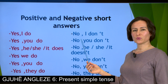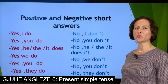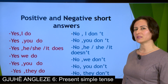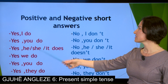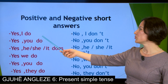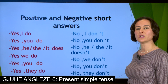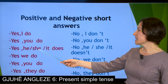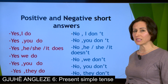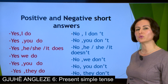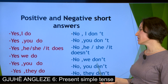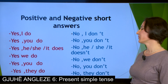In order to answer these questions, we use short forms, defined in two categories: positive and negative answers. Yes, I do. No, I don't. Yes, you do. No, you don't. Yes, he/she/it does. No, he/she/it doesn't. Yes, we do. No, we don't. Yes, you do. No, you don't. Yes, they do. No, they don't.